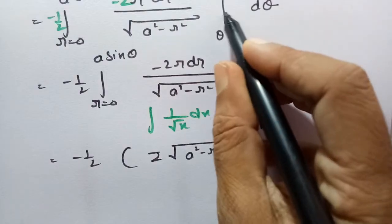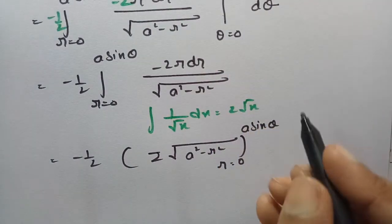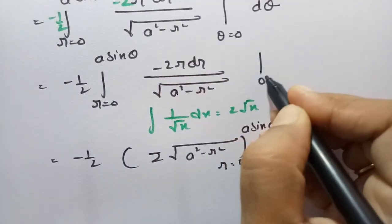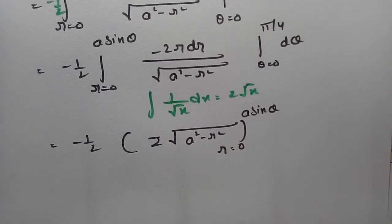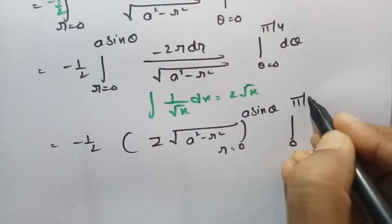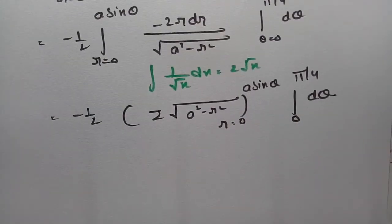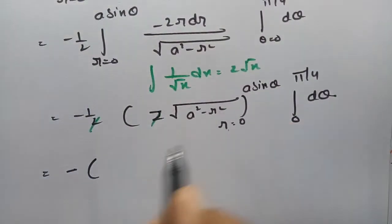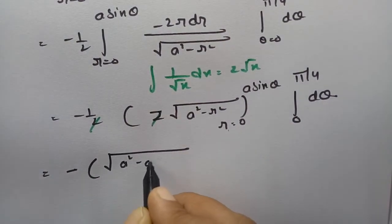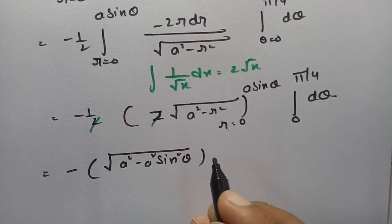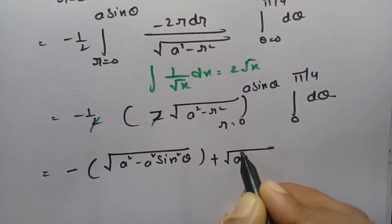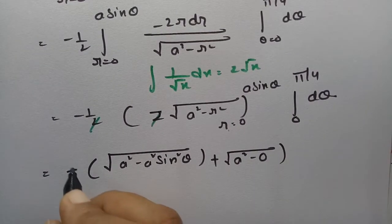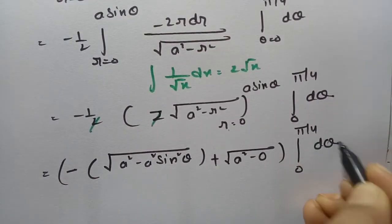And here integral d theta, theta from 0 to pi by 4. If I apply the limits this will be: root over a squared minus a squared sin squared theta, minus of minus plus root over a squared minus 0. So this is root of a squared times 1 minus sin squared theta, and a, which is root of a squared, all integrated from 0 to pi by 4 with d theta.